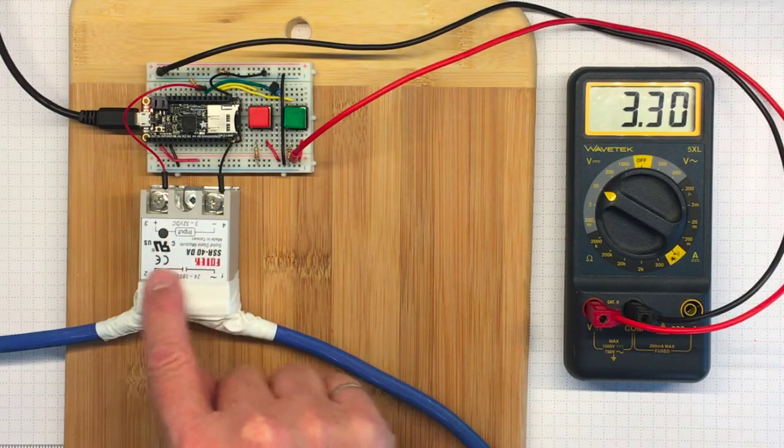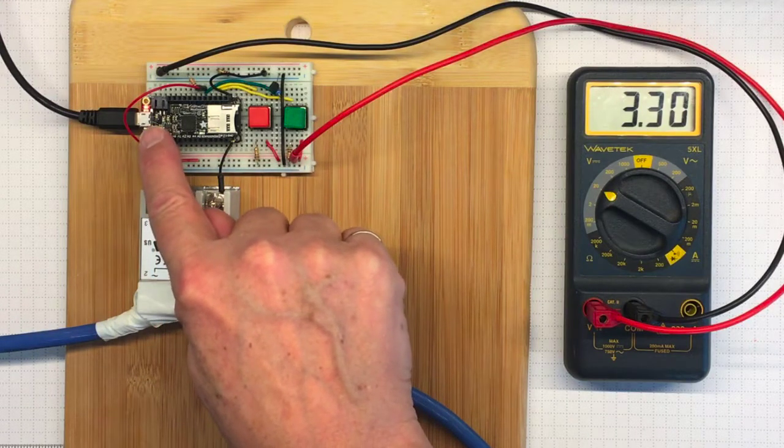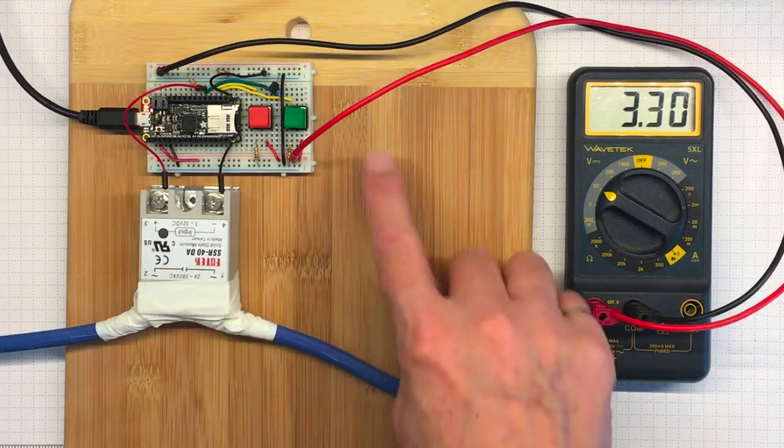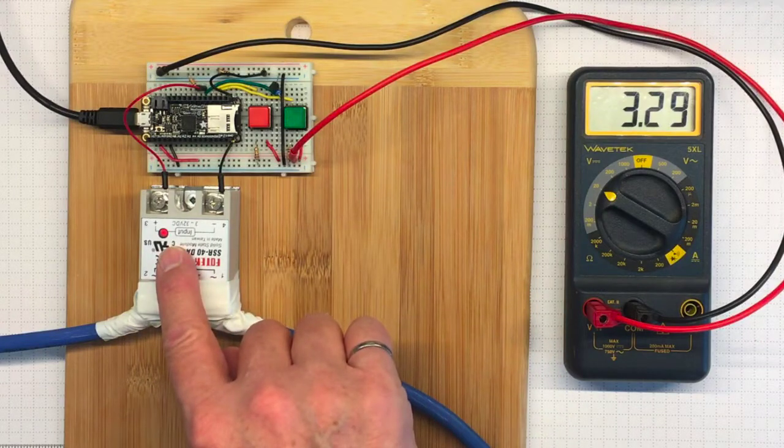That indicates that this solid state relay has been switched off. And eventually that light there will stop flashing and it will turn back on. Or I can turn it back on immediately with this button. And we see the little red light comes back on.